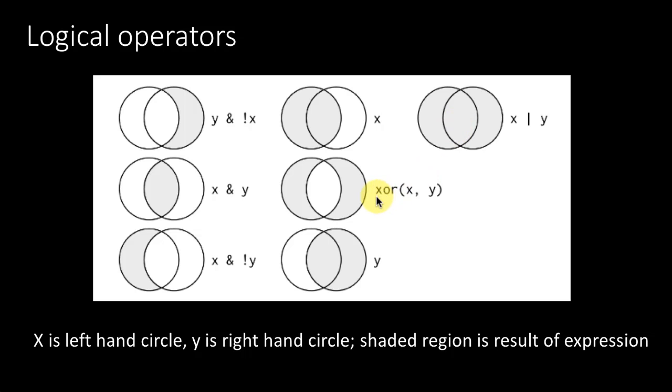So we are saying xor x, y. That means we are saying show me only things that either belong to x or y, but not to both. Then obviously the result is this. And this is x and not y, just like y and not x. What is it that belongs to x but does not belong to y? Obviously it's this region. And y alone is just the y circle. So that's just an explanation of all the logical operators in general. This is not specific to R. This is general understanding of logical operators in computing.